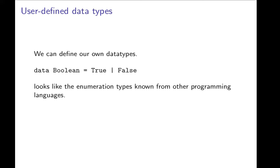The elements of type Boolean are true and false, and the vertical bar here denotes that a value can be true or it can be false. And this looks a lot like the enumeration types that we know from other programming languages.